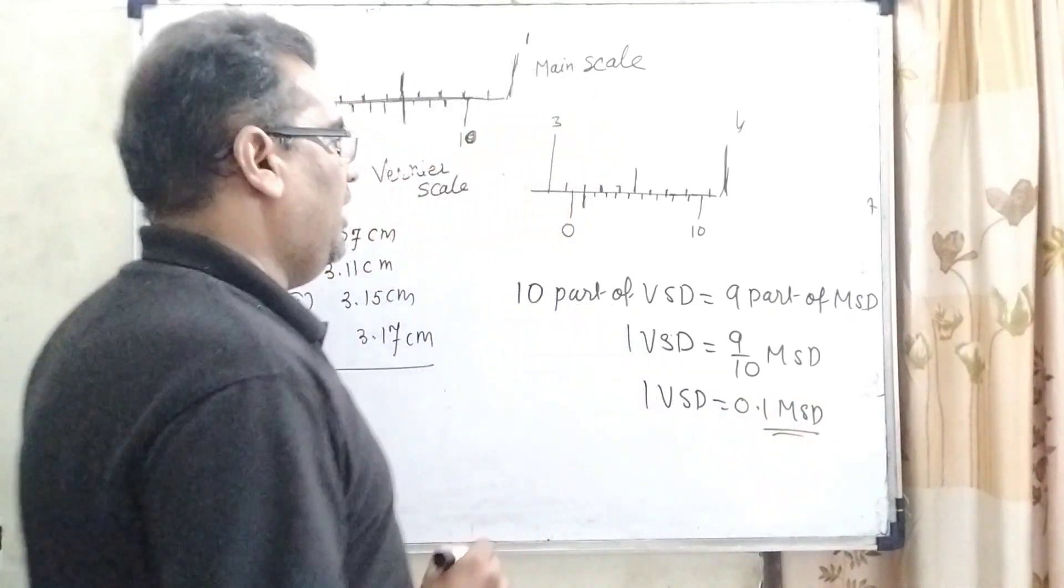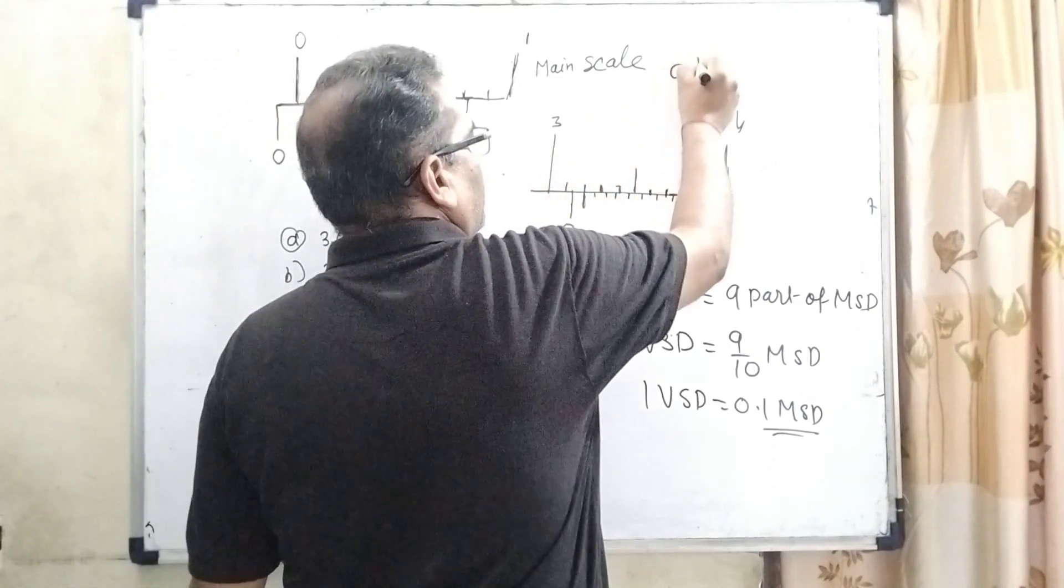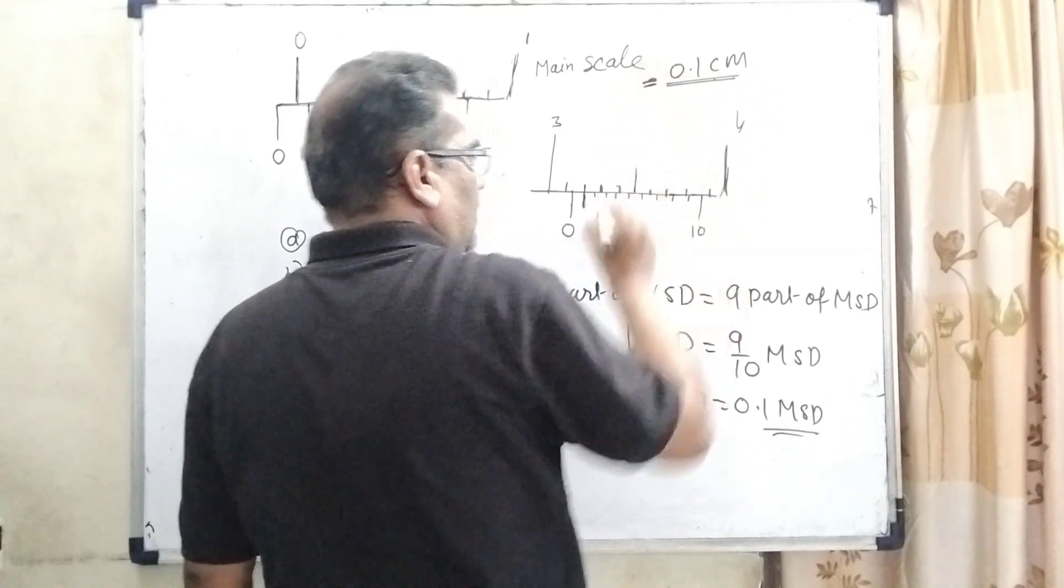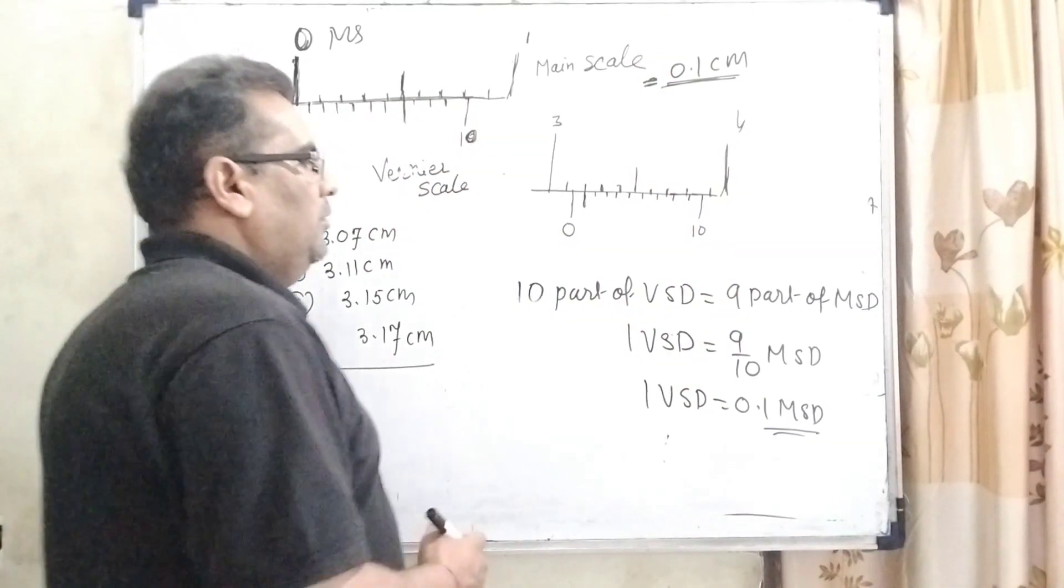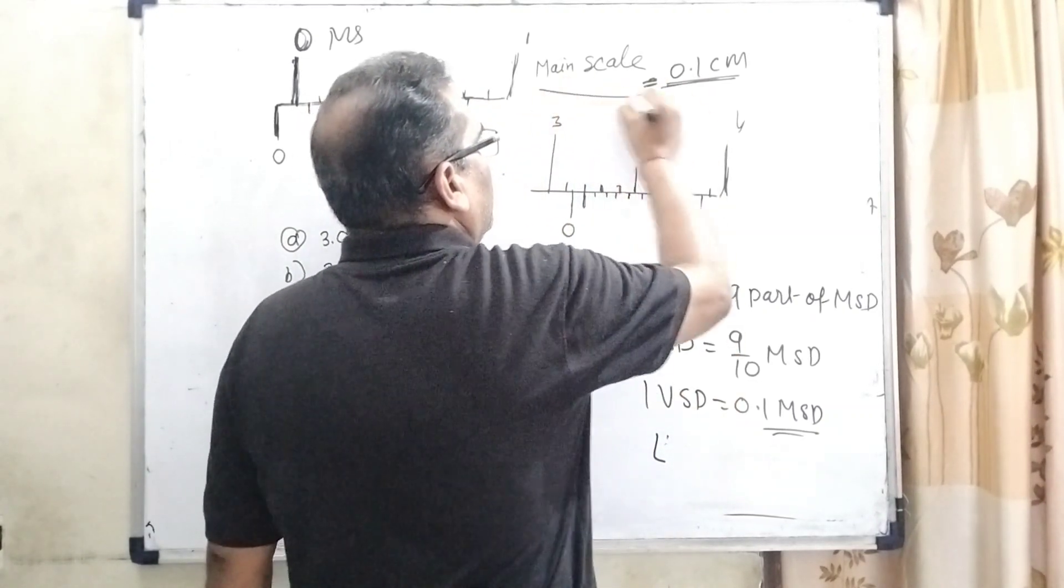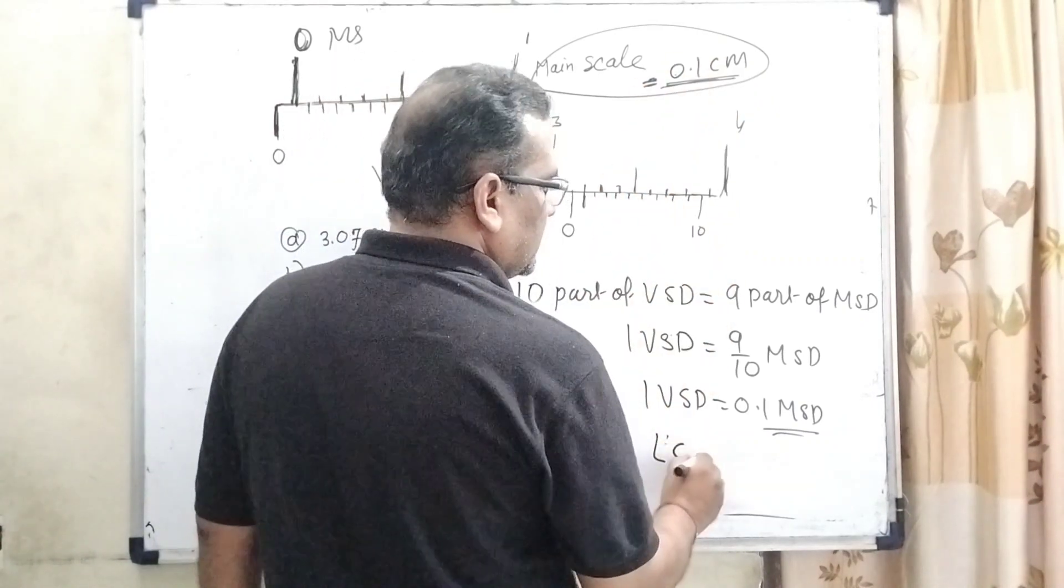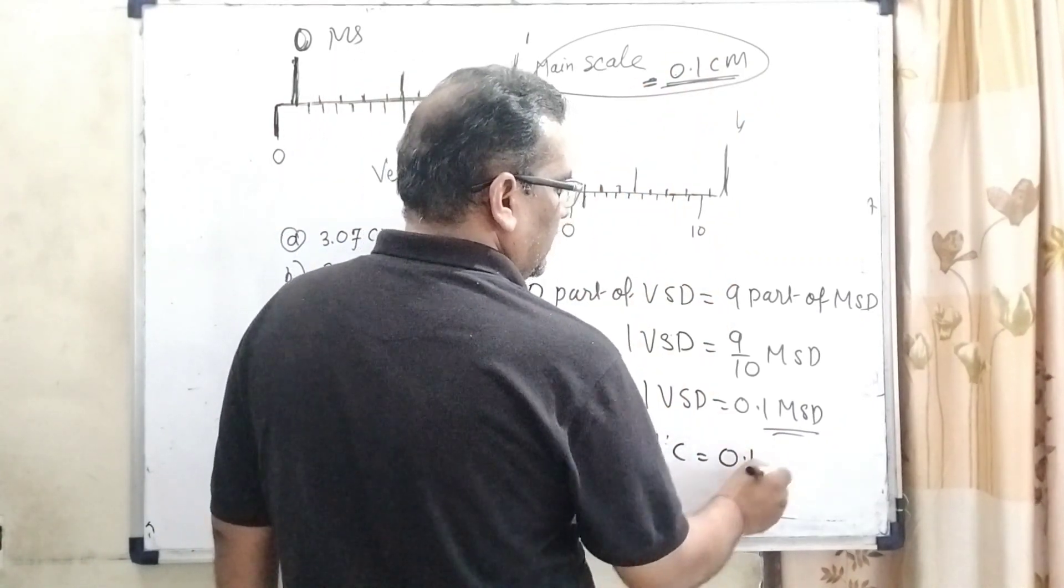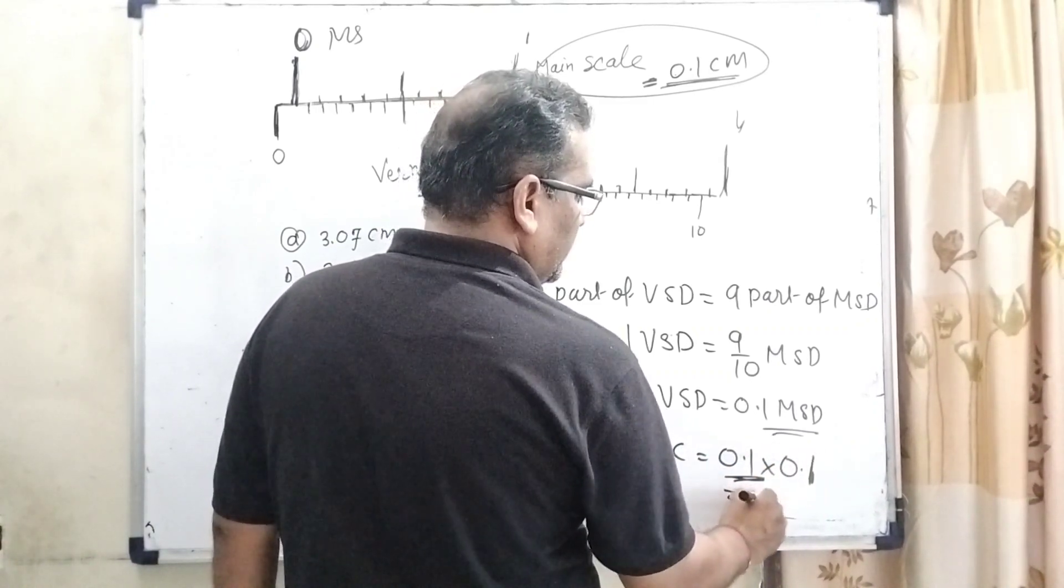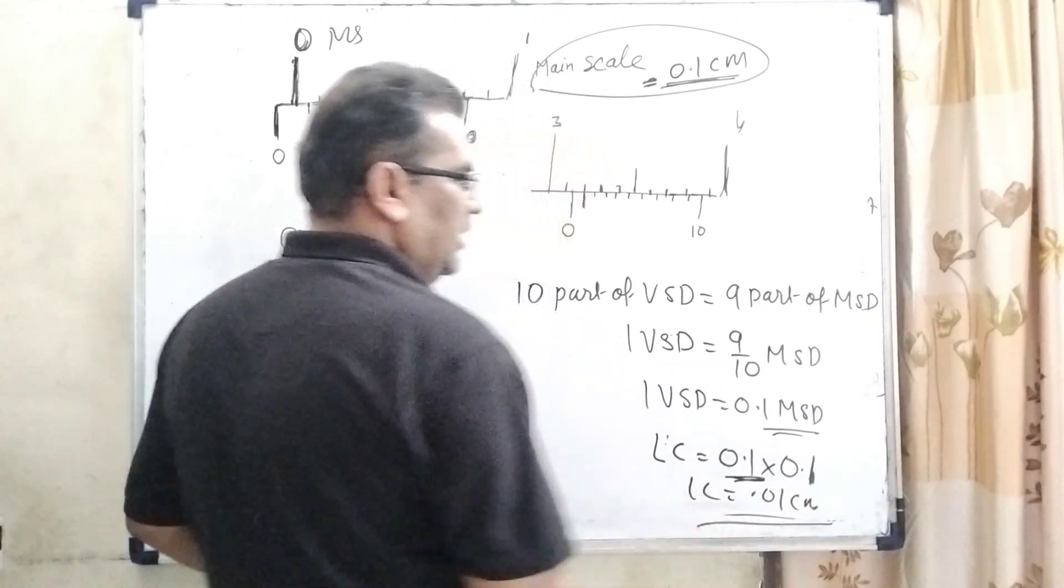Here we have given 0.1 centimeter is the smallest reading. Now, given in the question that smallest reading that can be measured is 0.1 centimeter. So here the least count is 0.1 multiplied by 0.1, which means 0.01 centimeter least count for Vernier calipers.